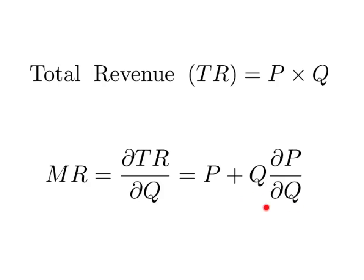That second term is quantity times the change in price for a change in quantity. For a price-taking firm, that firm could sell as much or as little as it liked given the price, so it didn't have to drop the price to sell another unit. For a price-taking firm, dP/dQ was zero, meaning marginal revenue was just the price.